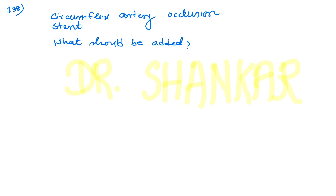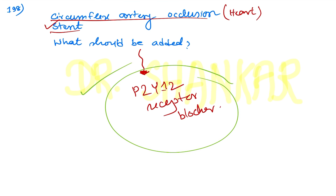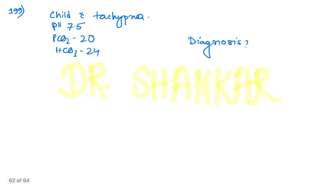Question number 198: circumflex artery occlusion, angioplasty and stenting done — what should be added? An antiplatelet agent, specifically a P2Y12 receptor blocker like clopidogrel, should be added. This is the correct answer.